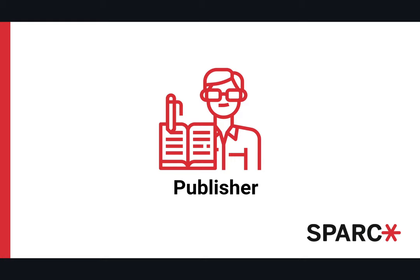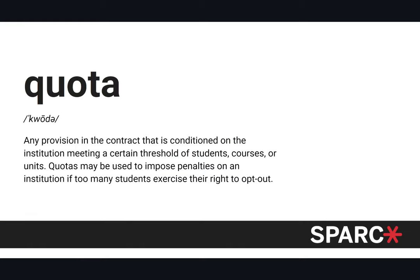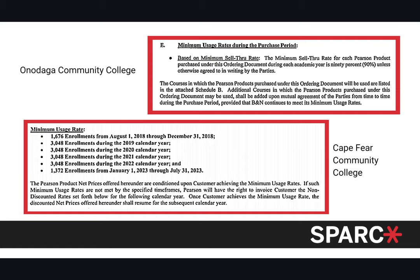Next we'll look at publisher contracts — the most typical type we see. Before diving in, it's important to establish what 'quota' means: it's any provision in the contract conditioned on the institution meeting a certain threshold of students, courses, or units, and there can be penalties if these quotas are not met. For example, at Onondaga Community College, the sell-through rate must be 90%, and if that isn't met there can be consequences.